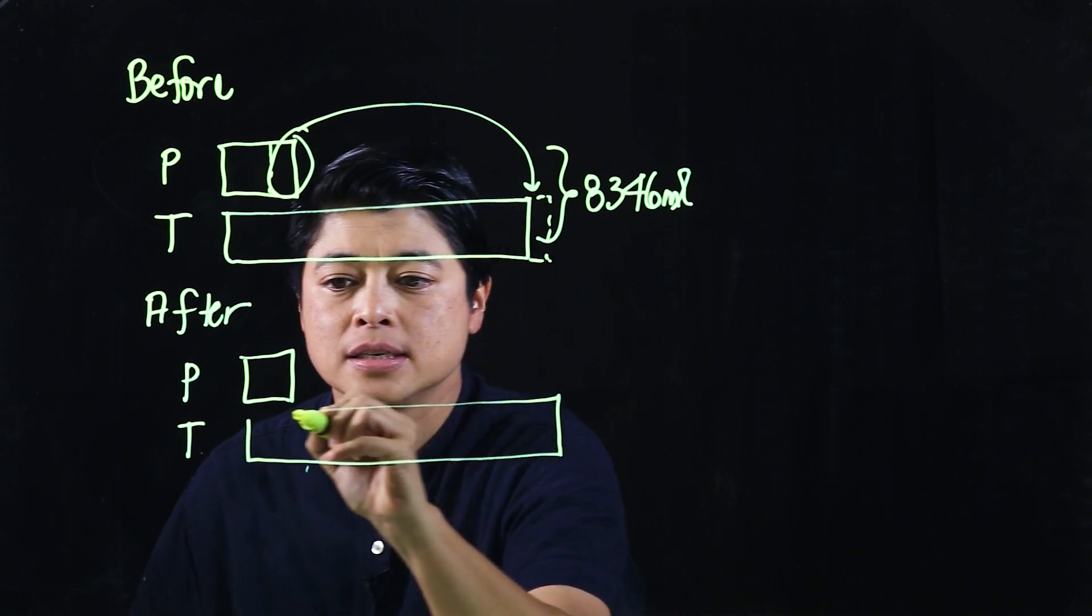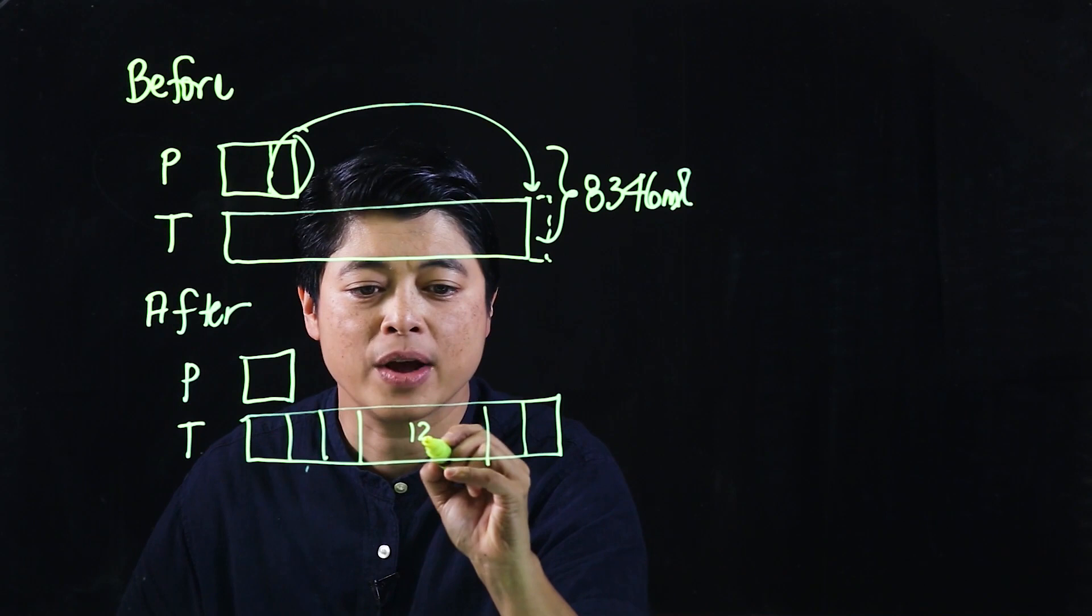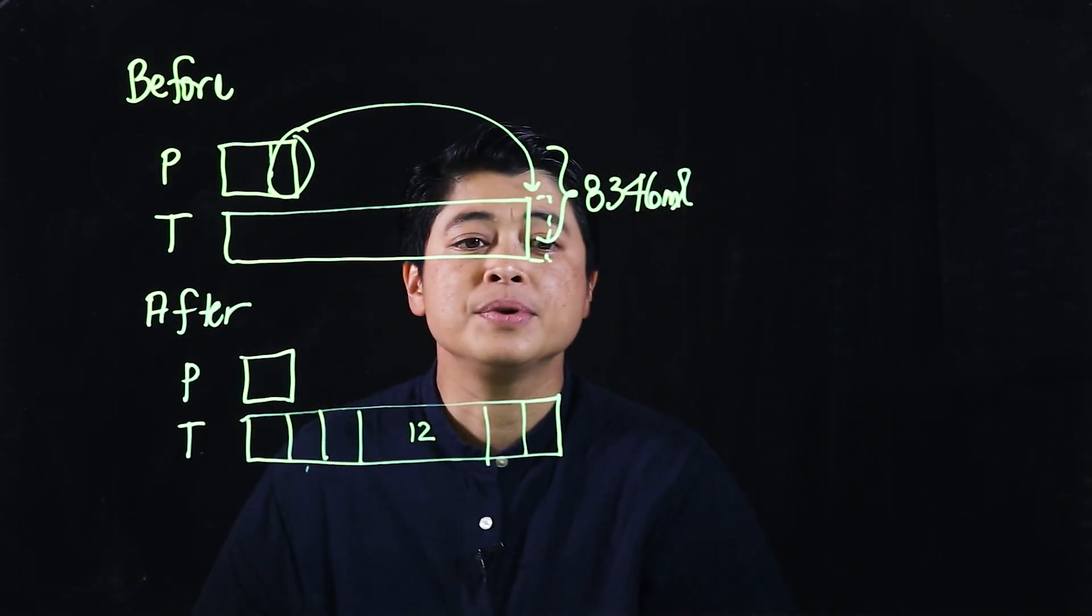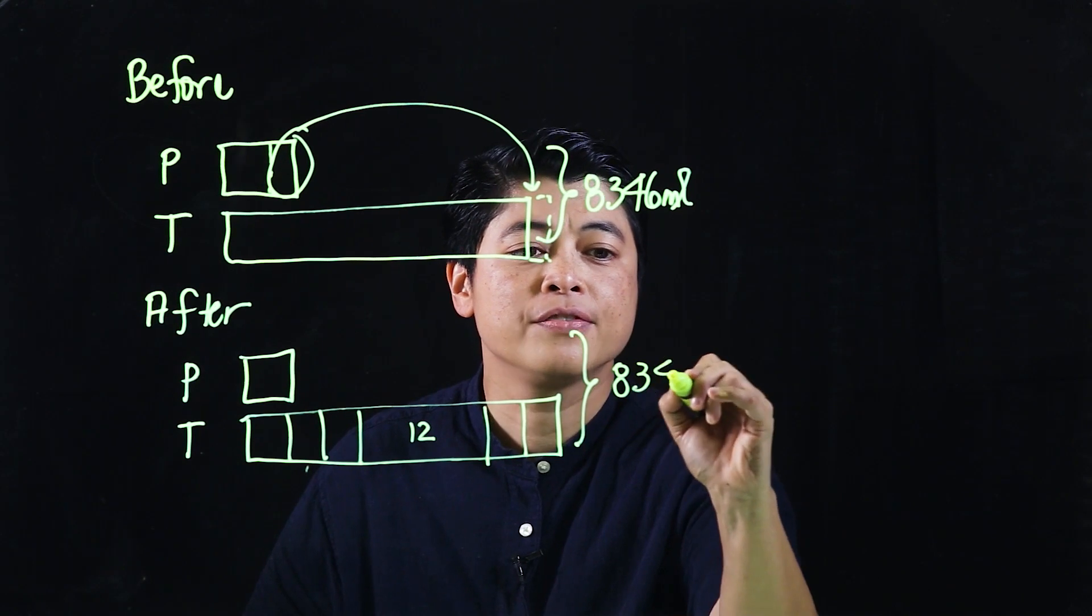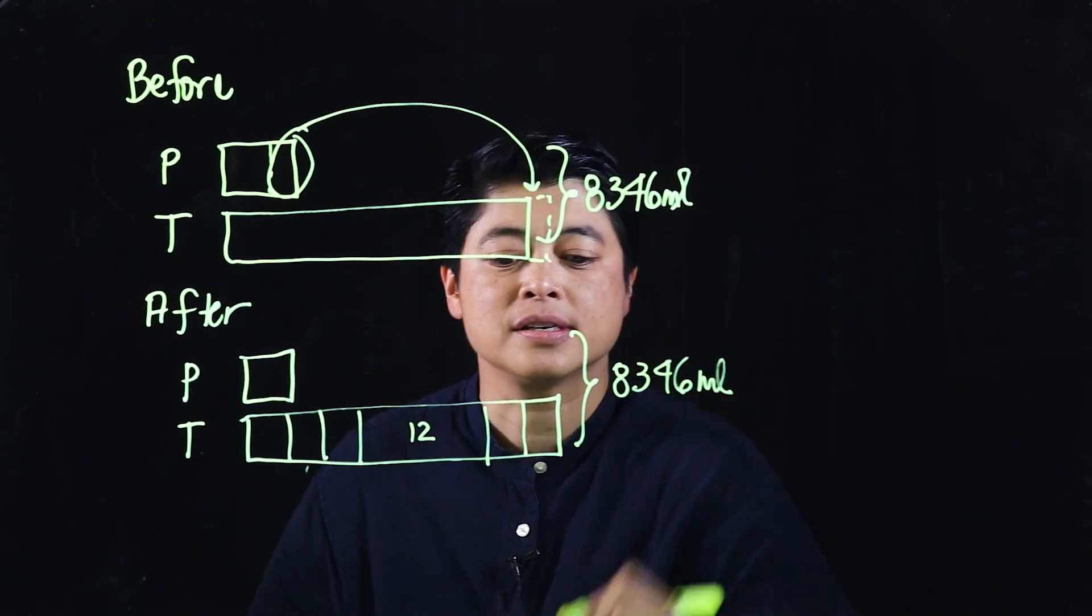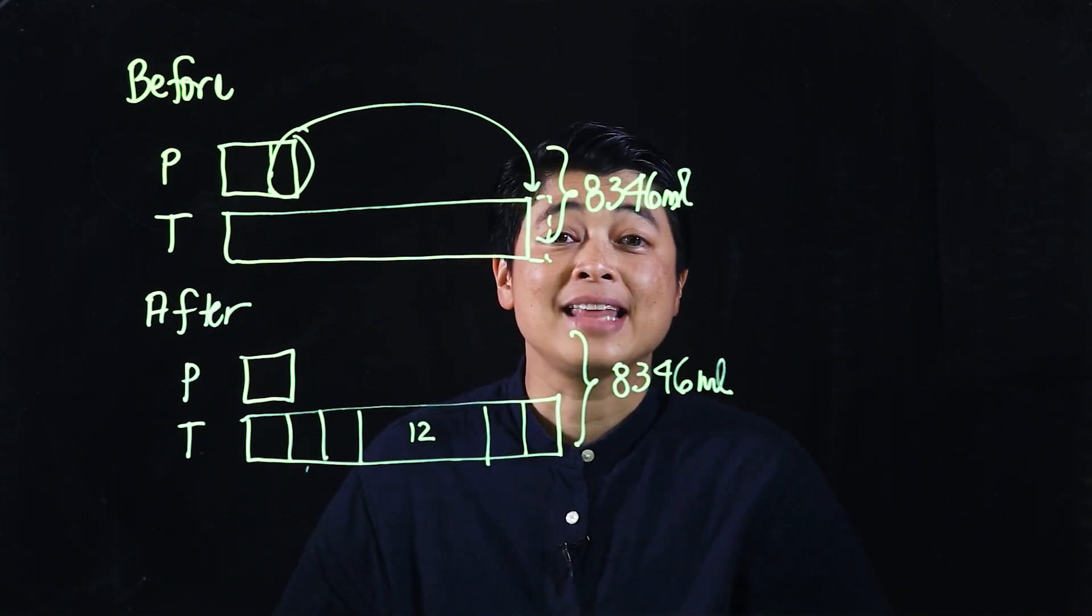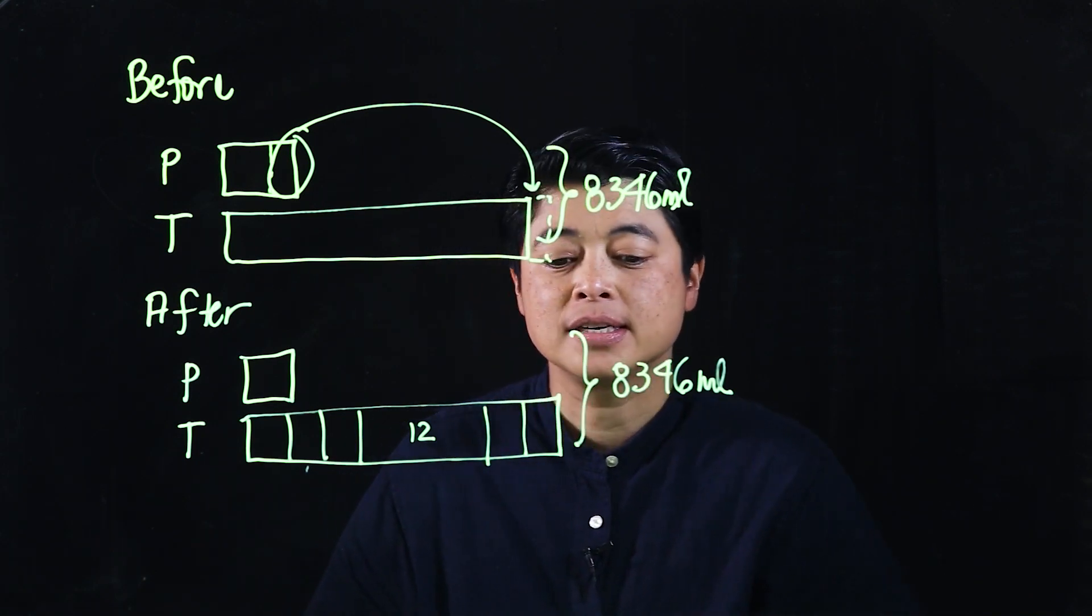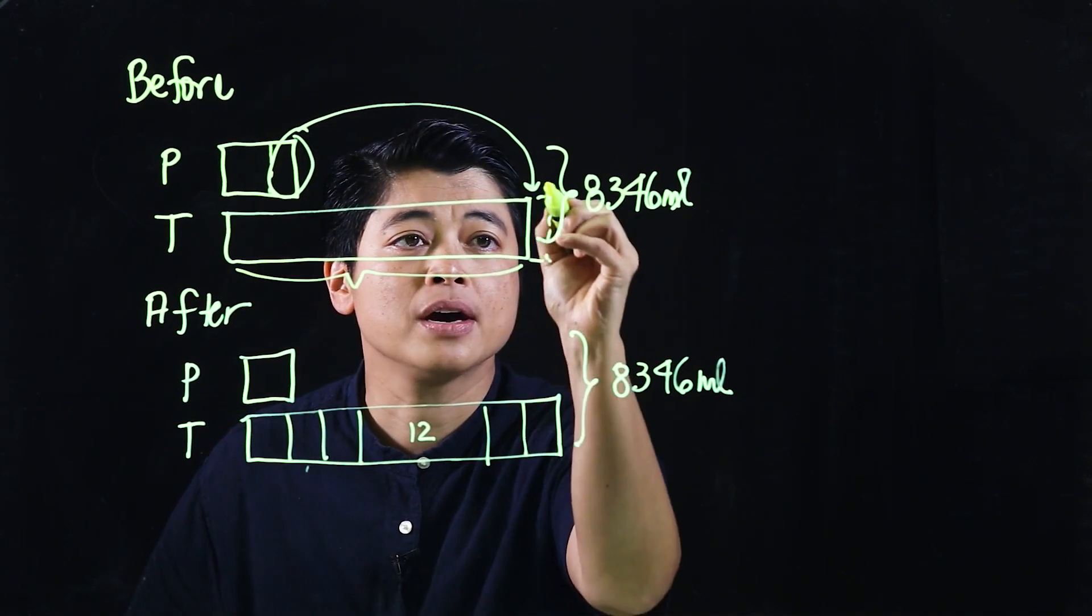After it's transferred, the tank has 12 times as much water as the pail. So that means one unit of this is 12 units of this. So let's just pretend that there's 12 units here. Which means this is still 8,346 milliliters. The question is how much water was in the tank at first, which means this is the question without this.